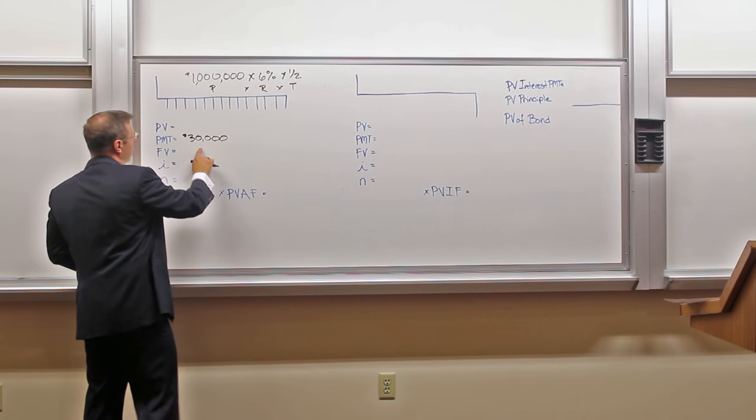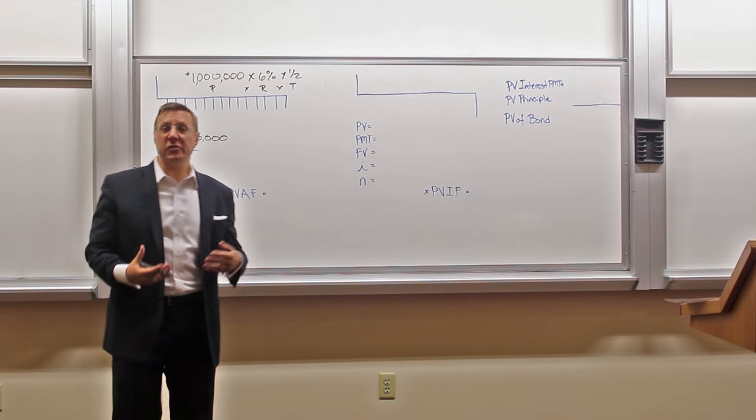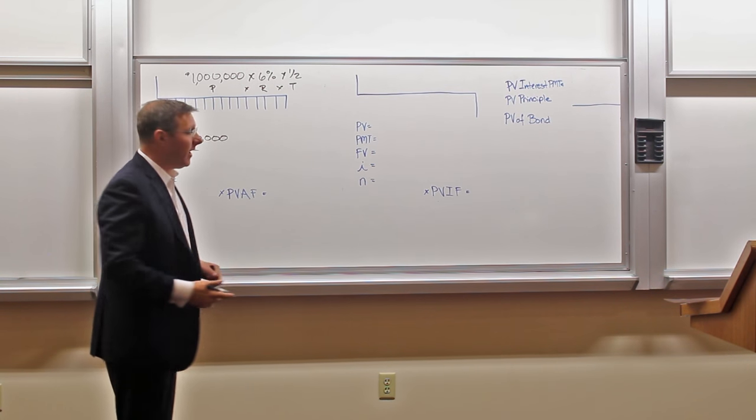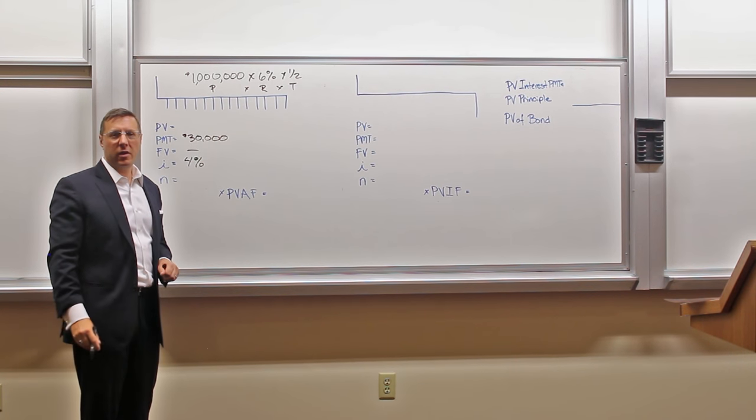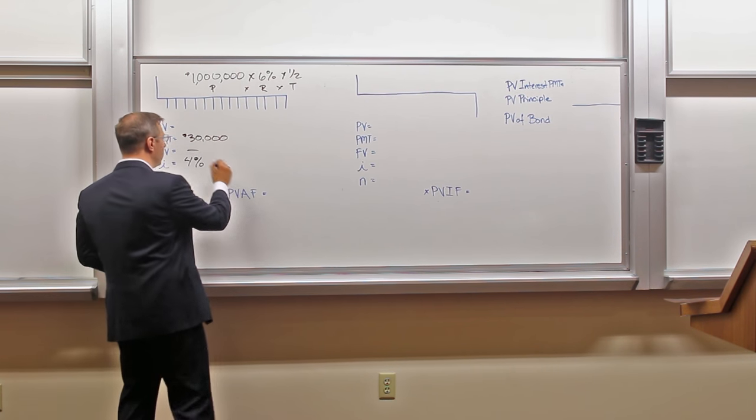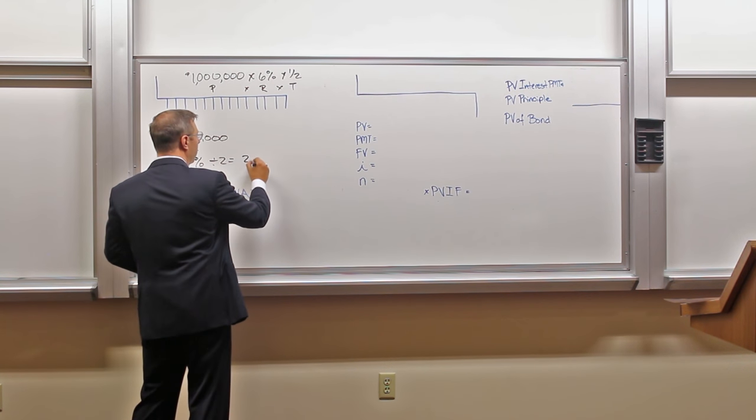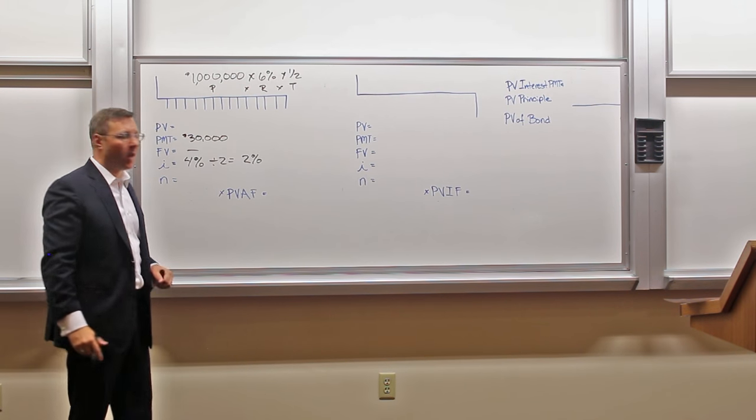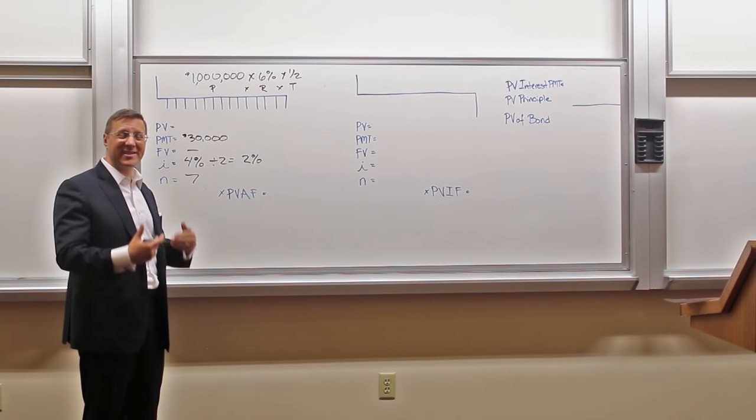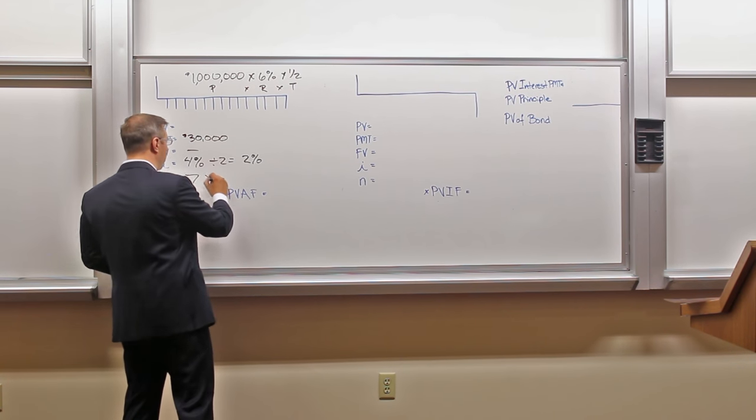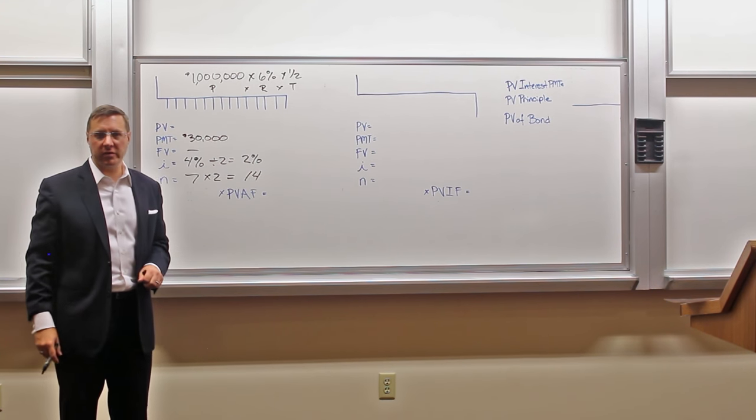Because there's no final payment other than the last payment here, the future value is zero. Our interest rate is based upon the market rate. The market rate of similarly rated bonds of similar maturity is 4%, but that is an annual rate and we adjust that by dividing in two to get a semi-annual rate. Our semi-annual rate is 2%. Number of periods this bond is going to pay is seven years, but because it pays semi-annually, twice per year, we multiply that by two and there are going to be 14 periods that we're going to calculate.